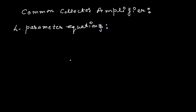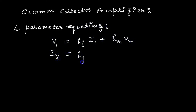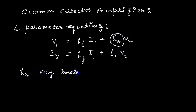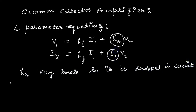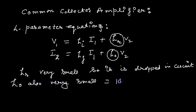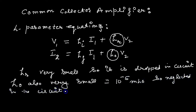The H-Parameter equations are: V1 = h11·I1 + hR·V2, and I2 = hF·I1 + hO·V2. We make some approximations: hR, the reverse voltage ratio, is usually very small so we drop it from the equivalent circuit. hO is also very small — its admittance is on the order of 10 to the power minus 5 mho — so it is also dropped from the equivalent circuit when using H-parameters for Common Collector.